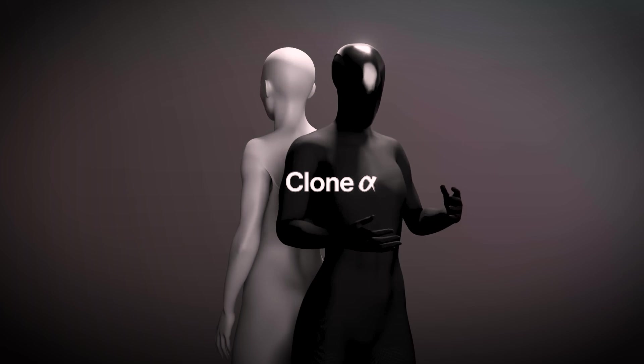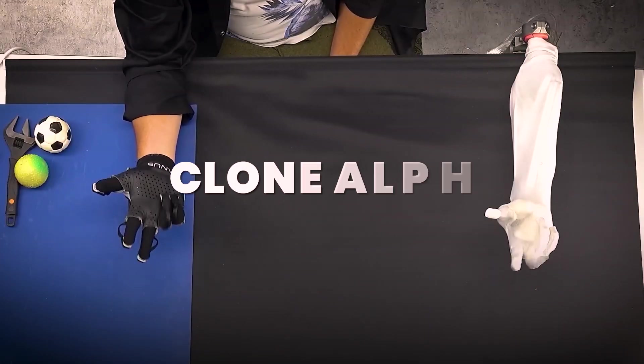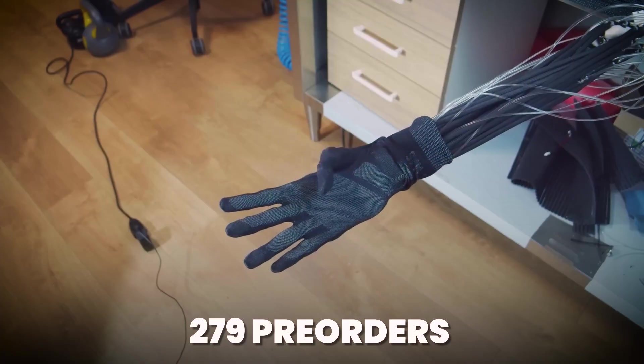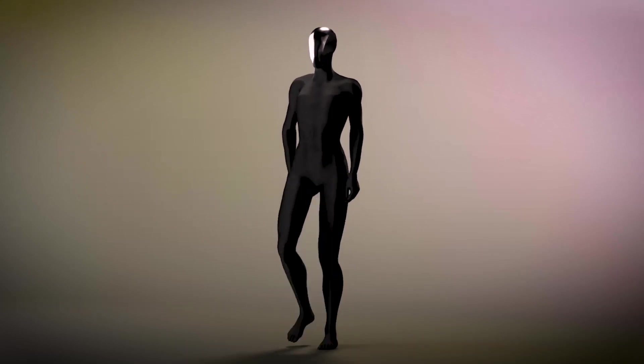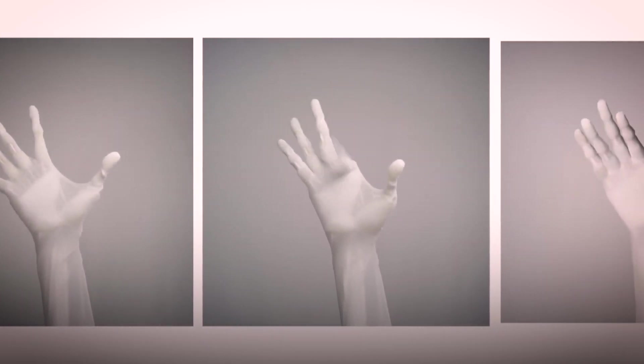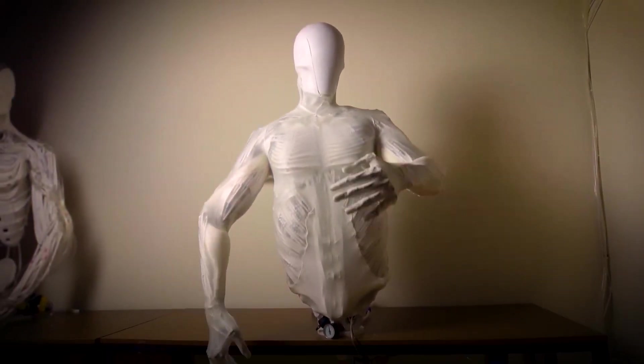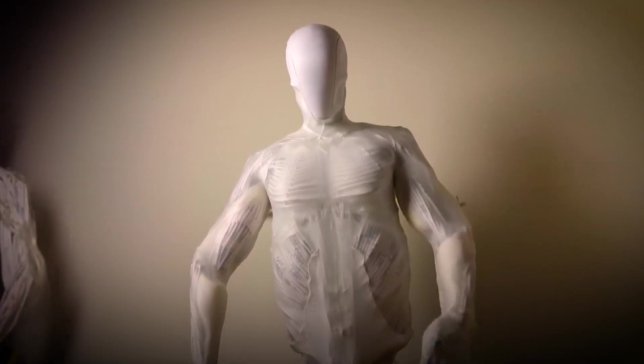Clone Robotics opened pre-orders for their water-powered humanoid robot Clone Alpha and boom, 279 pre-orders came flying in faster than your Roomba running from a toddler. That's right, 279 companies and individuals are now officially first in line for what might be the most terrifyingly realistic synthetic human ever built.